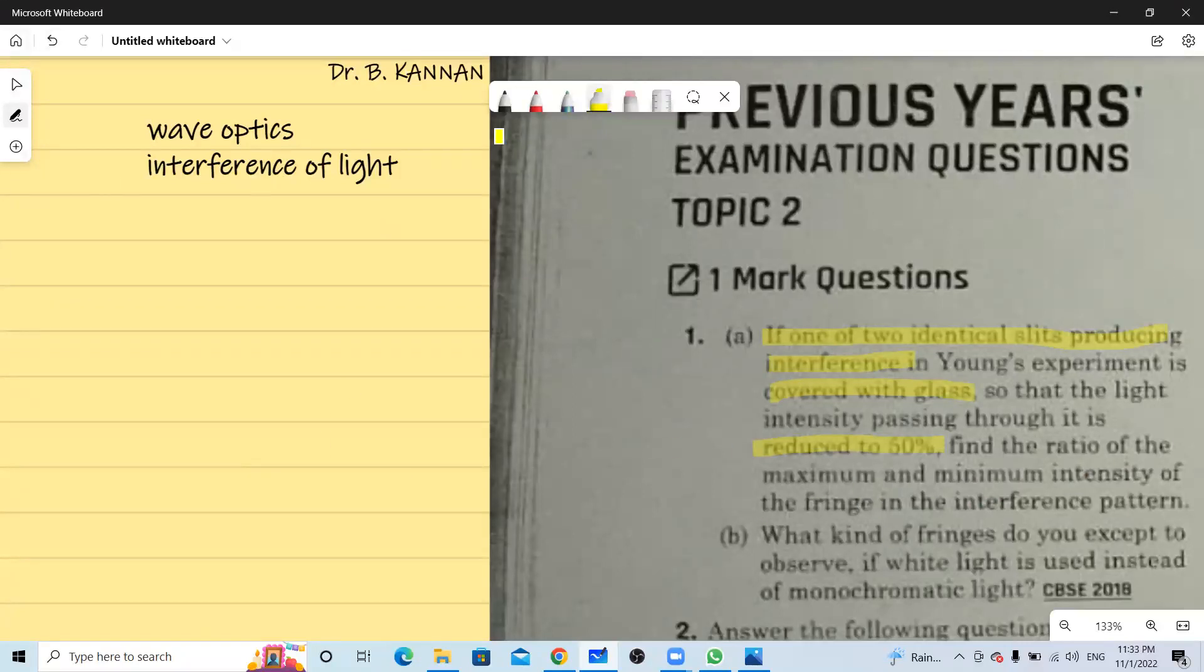They are asking ratio of maximum and minimum intensity. Question number one A. They are asking intensity maximum divided by intensity minimum. This is what they are asking.